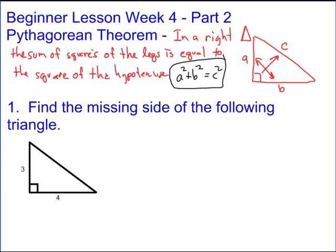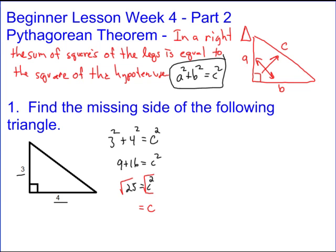Let's do number one: three squared plus four squared equals C squared. The two legs are three and four. That gives you nine plus sixteen equals C squared, which gives you twenty-five equals C squared. Now, how do I solve this equation? I want to find the actual missing side, which is C. The key to getting rid of the square is you take the square root. Once we get a square equal to a number, we take the square root of both sides. The square root of C squared is just C, and the square root of twenty-five is five. So the missing side is five.